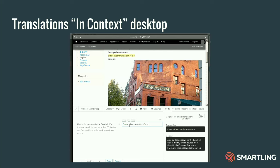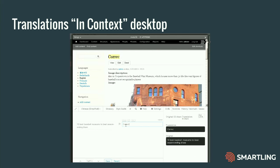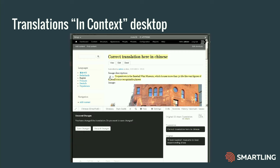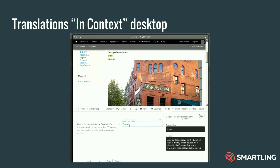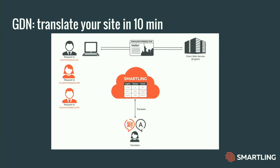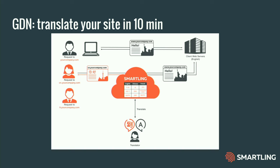They also have in this interface translation memory, so that anything that's previously been translated they'll have access to. They'll be prompted that this is already translated, and it allows for faster, higher-quality translation at a lower cost. There's another capability that Smartling has, which we call the GDN — Global Delivery Network.